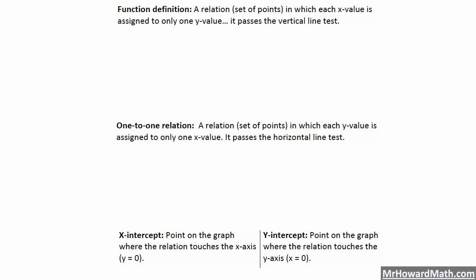Let's look at our first definition: the definition of a function. A relation is just a set of ordered pairs. A function is a relation in which each x value is assigned to only one y value, and that means that it passes the vertical line test.